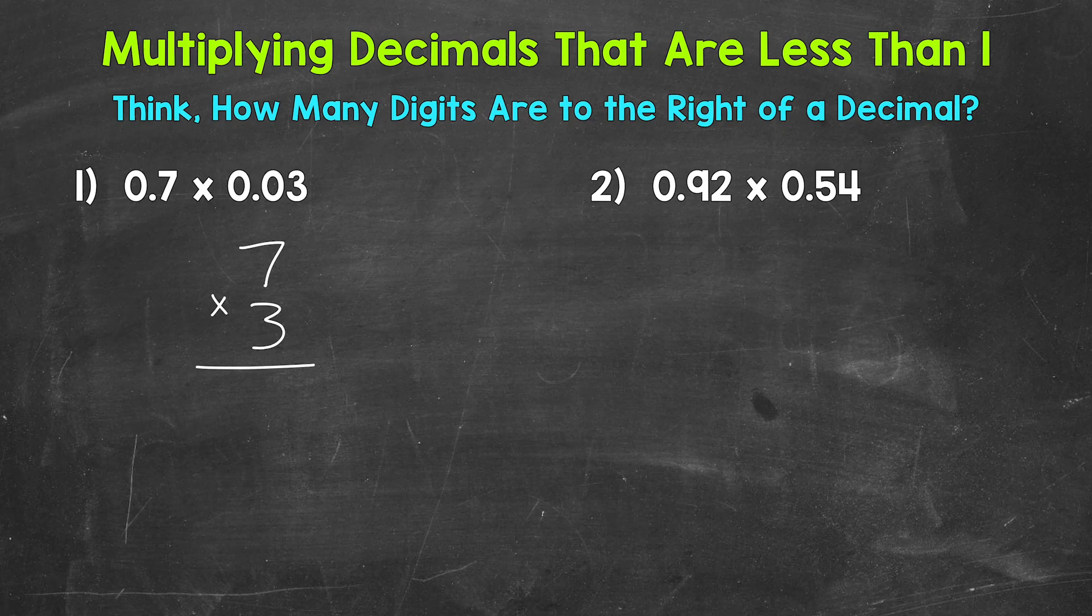We will worry about placing the decimal later in our answer. Now we can multiply. 7 times 3 is 21.